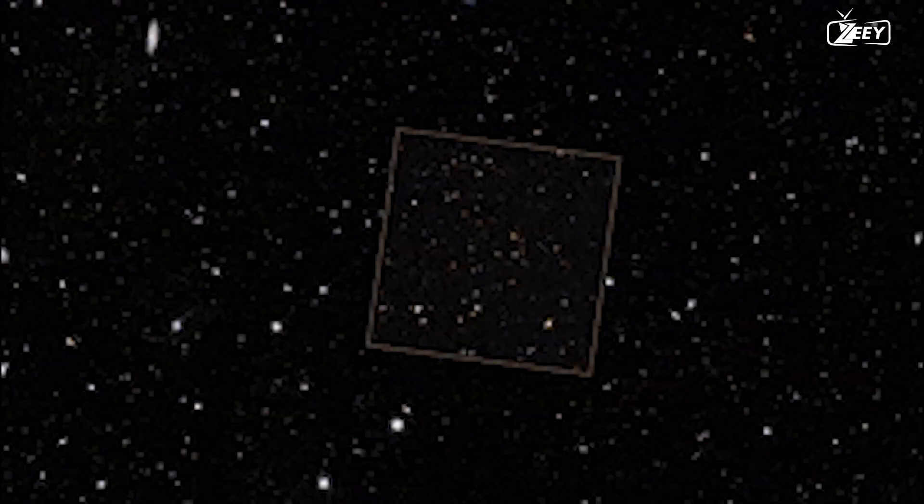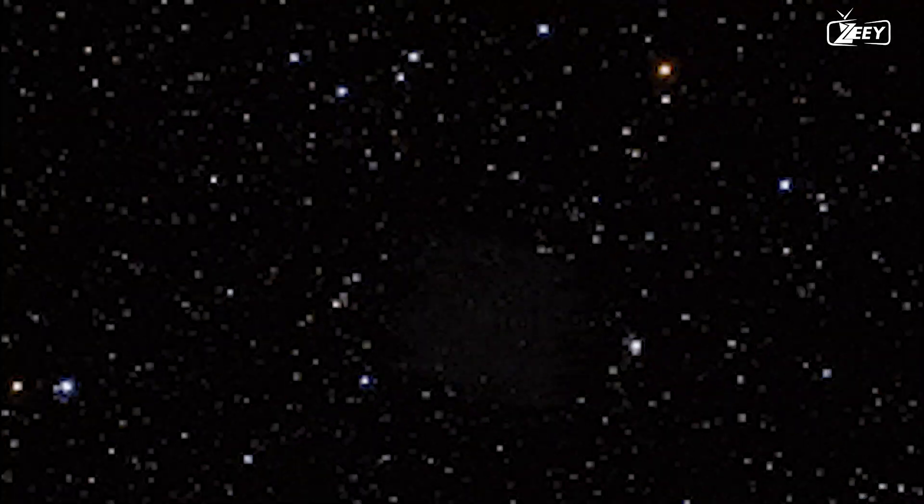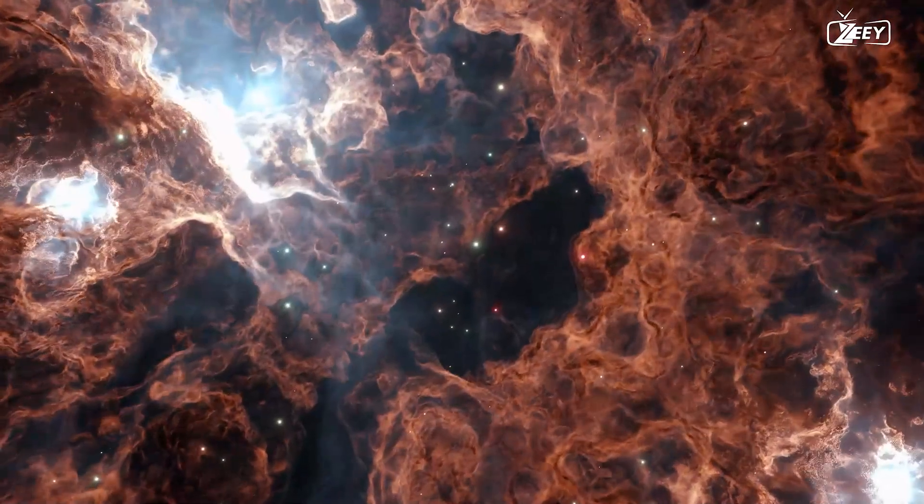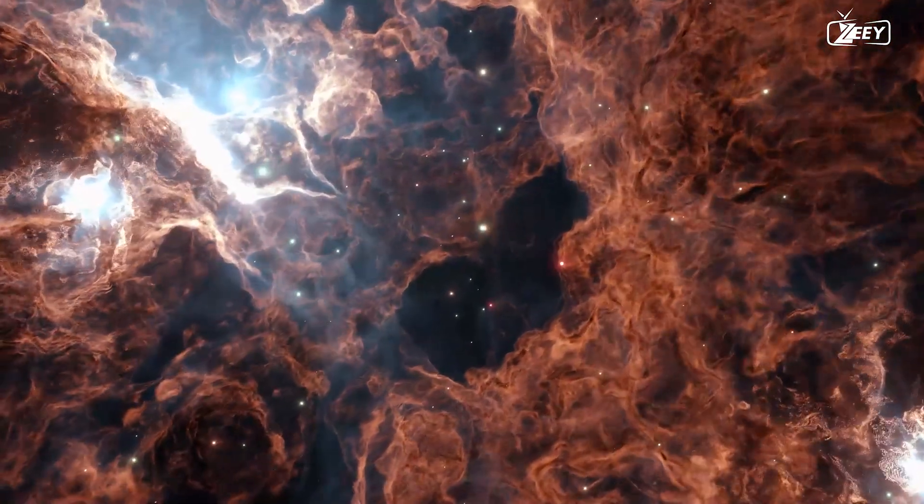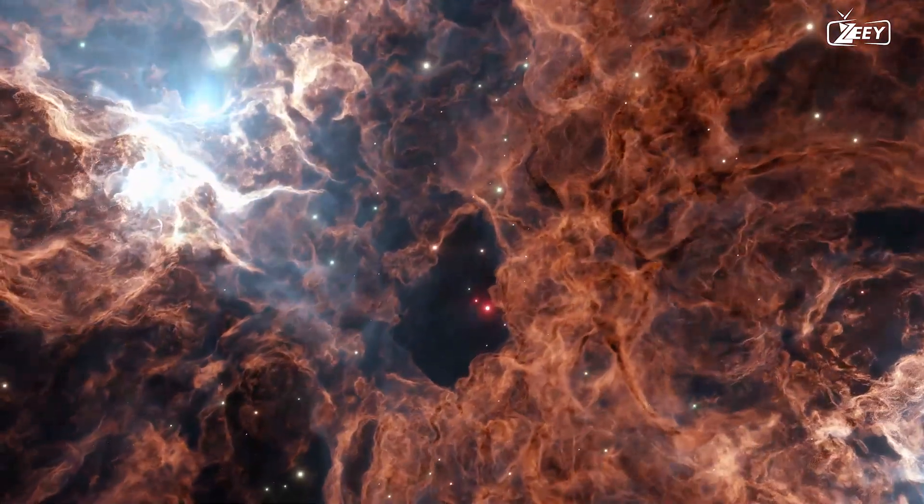Images of galaxies of all shapes and sizes, including spiral, elliptical, lenticular, red, blue, orange, and yellow galaxies, revealed the universe in ways that scientists could never have predicted. This merged image is currently referred to as Hubble Deep Field.